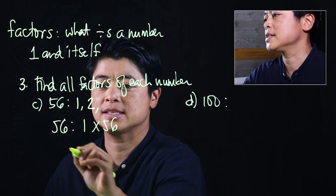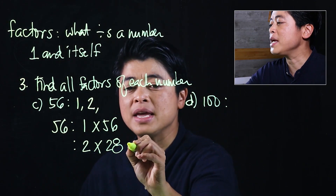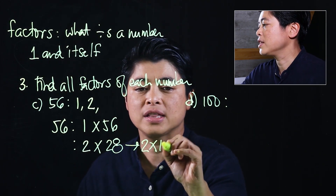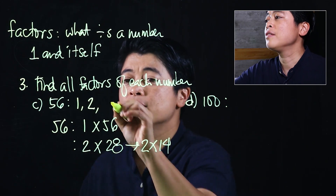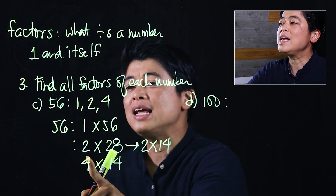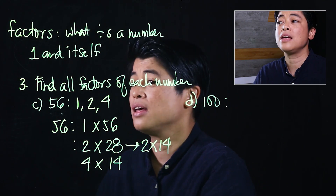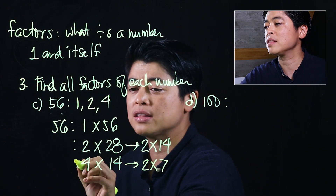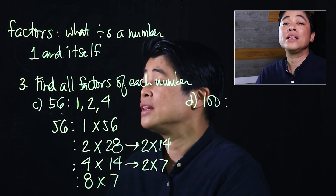We start with 1 and 56, then 2 times 28. From 28, that's 2 times 14, so the next factor of 56 must be 4, giving us 4 times 14. Clearly 3 does not factor here because if you add the digits that's 11, and 11 cannot be divided by 3. Continuing, 14 is 2 times 7, so 4 times 2 is 8 times 7.